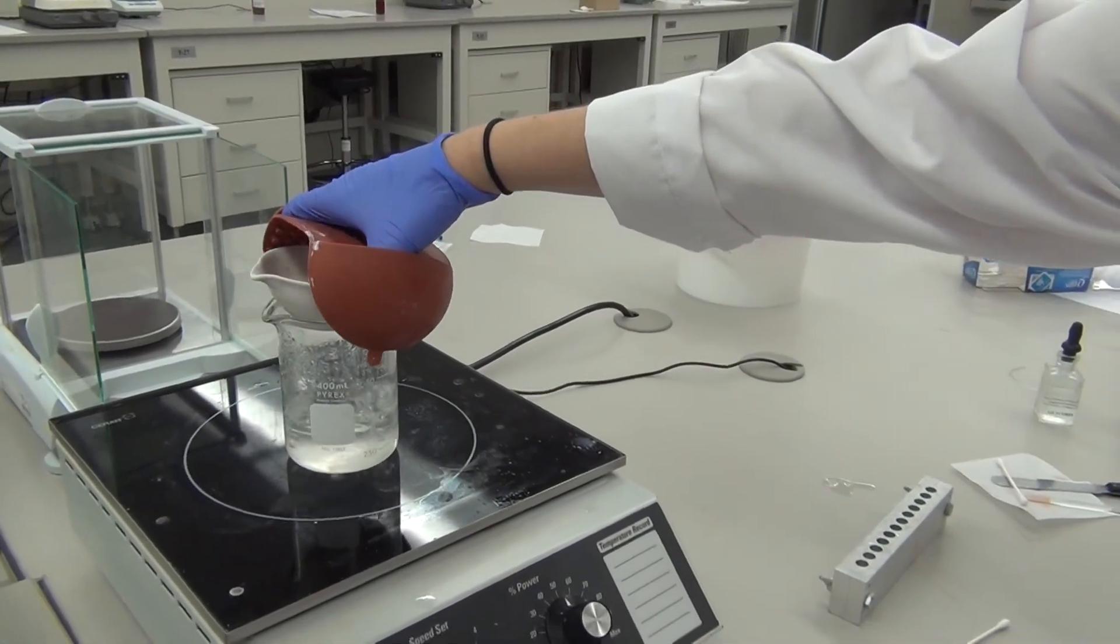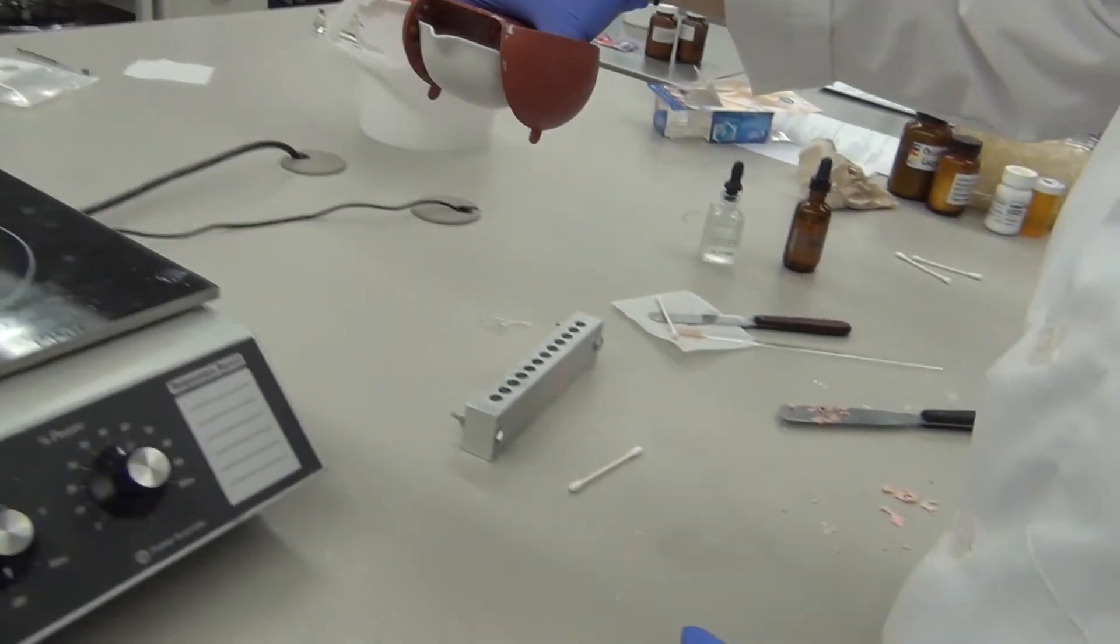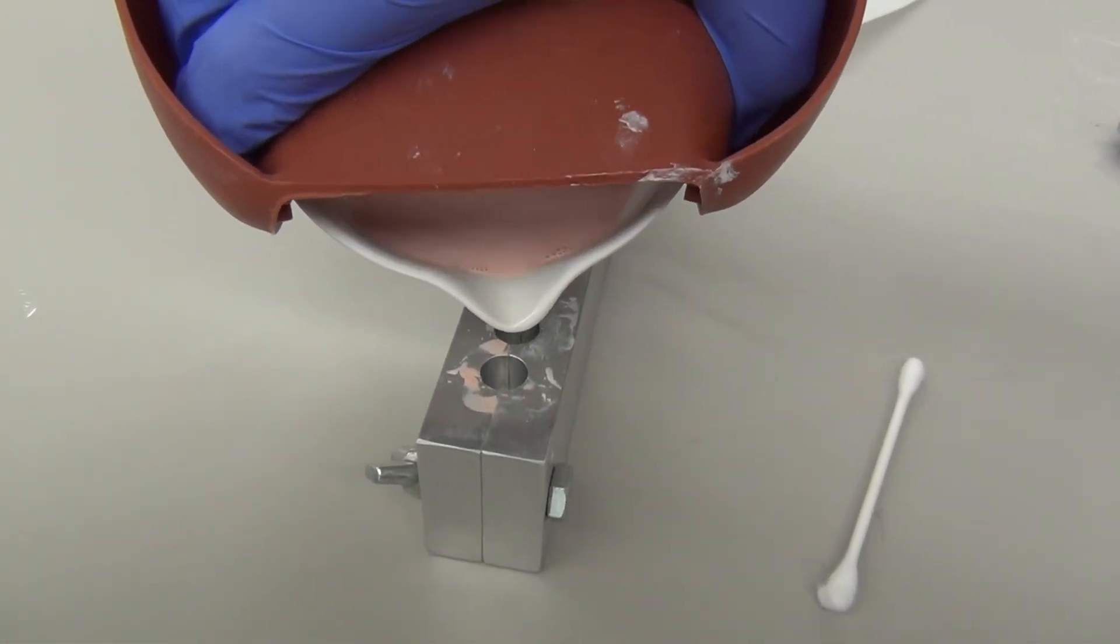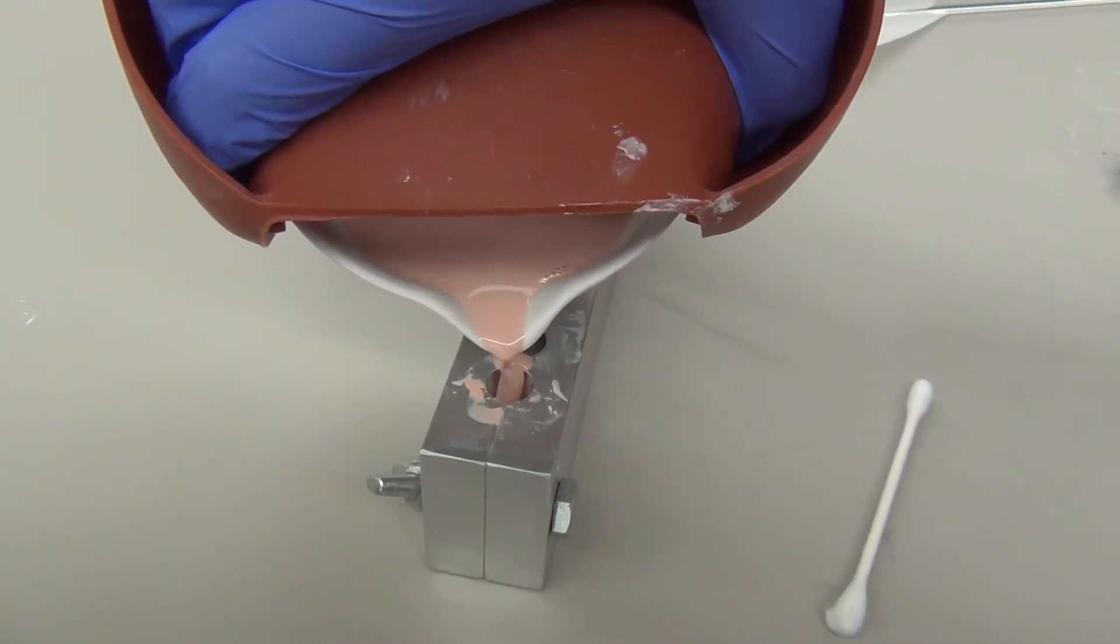Once the suppositories have melted, you can go ahead and remove the evaporating dish from the water bath. Pour the mixture into the suppository mold, making sure to overfill the cavities slightly.